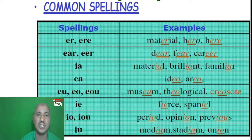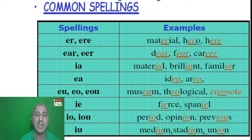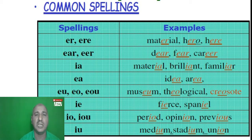What are the letter combinations that make the /ɪə/ sound? The first spelling pattern is E-R-E, found in words like 'here'. Another pattern is E-A-R, and also E-E-R, seen in words like 'dear', 'fear', and 'career'. These letter combinations all produce the /ɪə/ sound.